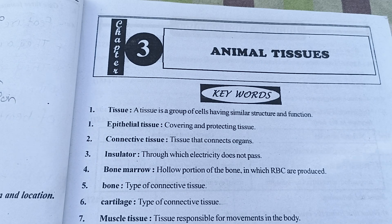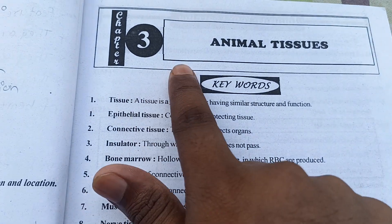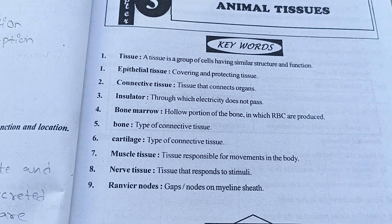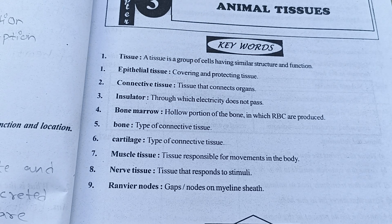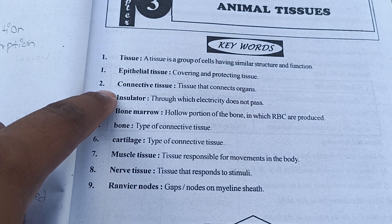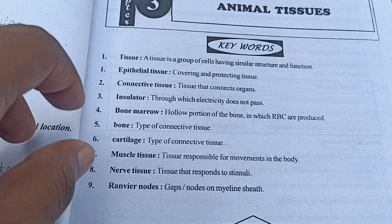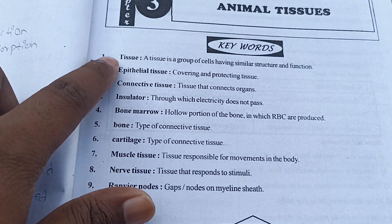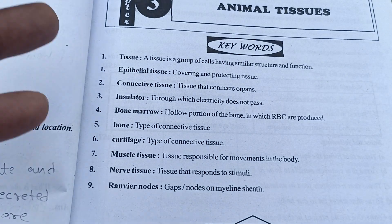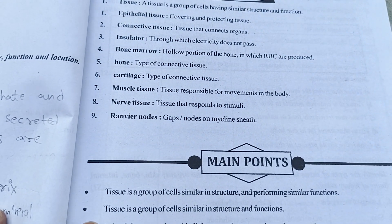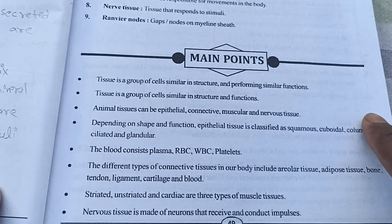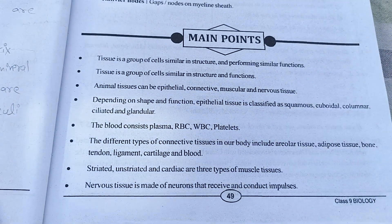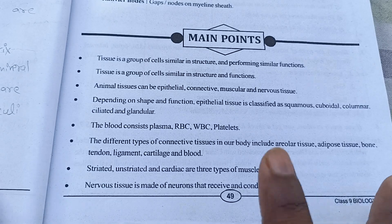You can see this is Chapter 3 - Animal Tissue keywords and the answers. One thing to note: if the keywords are in a different order, just match them. In the old textbook, tissue is listed first, but the new 2020 modified book has a different order. So don't get confused — everything is the same content, just the arrangement is slightly different. The question answers are correct, don't worry.